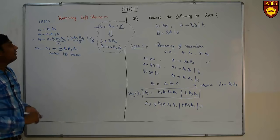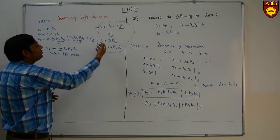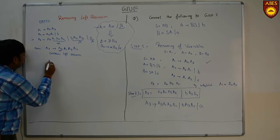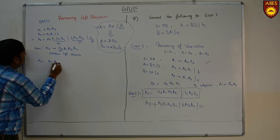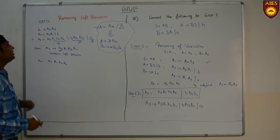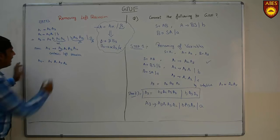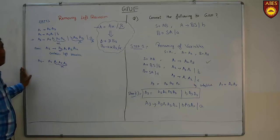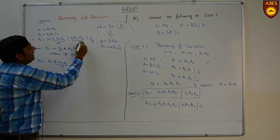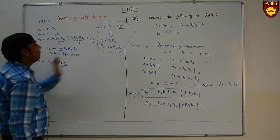We have to remove the left recursion using the formula. The term A3 A1 A3 A2 has a left recursion. Comparing with A tends to form A alpha: A3 is A, the A1 A3 A2 part is alpha. The rest not containing A3 — B A3 A2 — is beta.